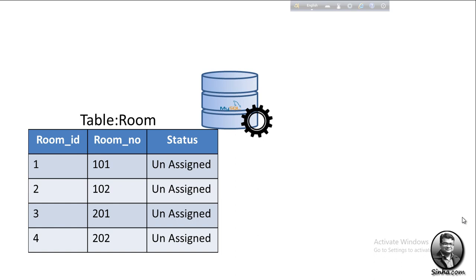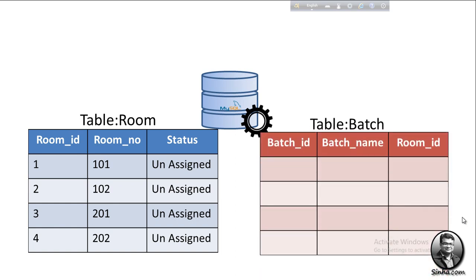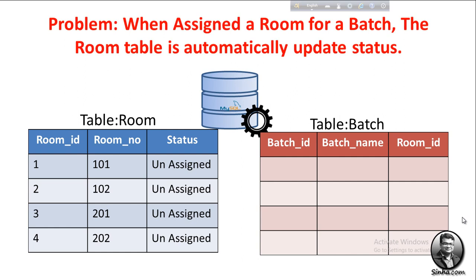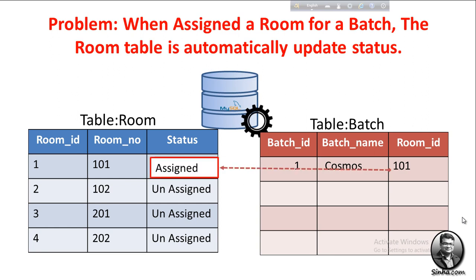status. The second table is 'batch', which has batch ID, batch name, and room ID. The problem is: when we assign a room for a batch, the room table should automatically update the status. So let's create the trigger.